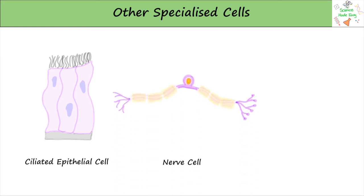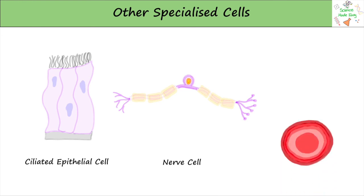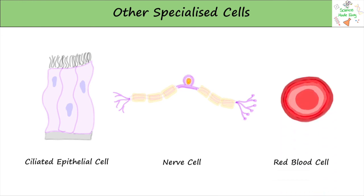The nerve cell is specialized to be extremely long, to help it carry impulses over long distances quickly. Finally, the red blood cell doesn't have a nucleus, to help make more space for oxygen. Its DNA is loose in the cytoplasm instead.